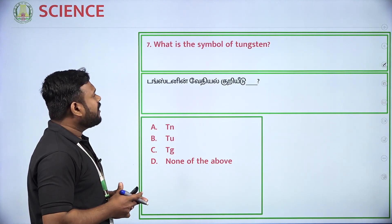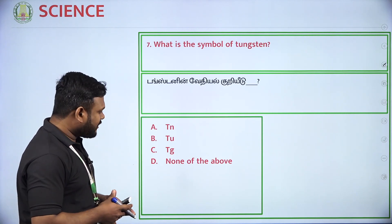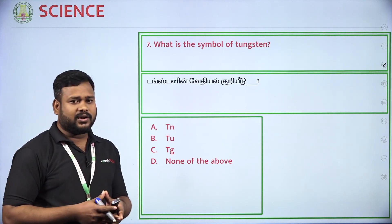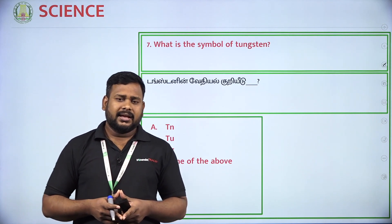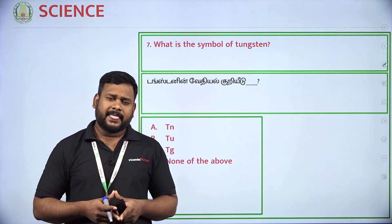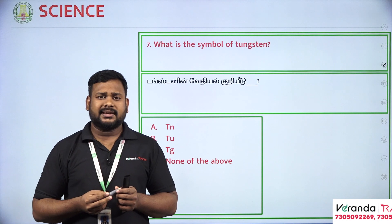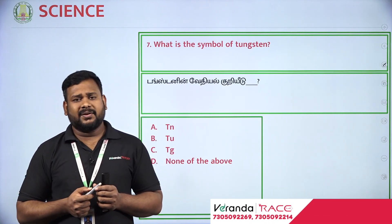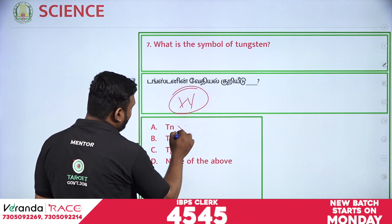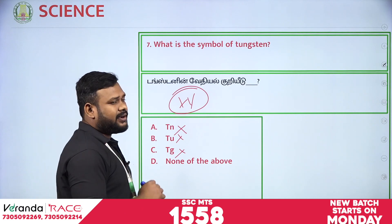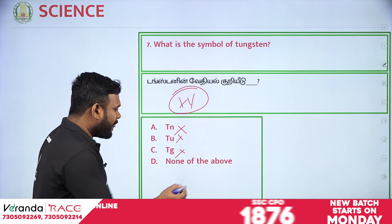What is the symbol of tungsten? Options are TN, TU, TGI, and none of the above. If you check tungsten on a bulb, the symbol is W — from the word 'Wolfram.' So option D — none of the above — is the answer, because W is the correct symbol.